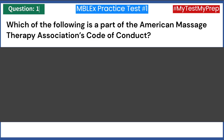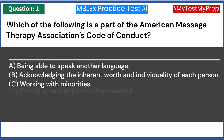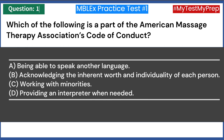Which of the following is a part of the American Massage Therapy Association's code of conduct? A) Being able to speak another language. B) Acknowledging the inherent worth and individuality of each person. C) Working with minorities. D) Providing an interpreter when needed. Answer: B — acknowledging the inherent worth and individuality of each person.